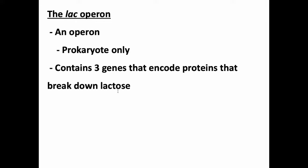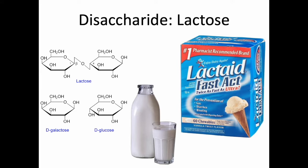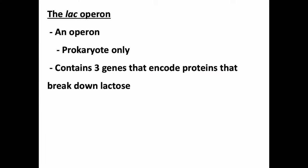That explains the operon part. What about lac? Well, lac stands for lactose. This operon contains three genes that encode proteins involved in breaking down lactose. You may remember lactose — it is a disaccharide. In order to do anything with it, we have to break apart the glycosidic bond and create monosaccharides. Obviously we break down lactose as humans from milk, unless you're lactose intolerant. But again, we have these genes — we just don't organize them in an operon. This operon we're talking about is prokaryote only.